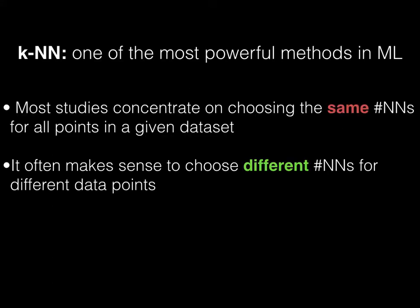Looking at the literature regarding nearest neighbor rules, we have noticed that most of them concentrate on choosing the same number of neighbors for all data points in a given dataset. However, it often makes sense to choose different number of neighbors for different data points.